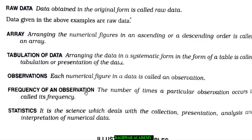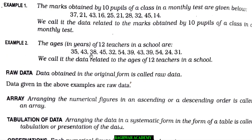Then you have frequency of an observation. Frequency means how many times it is coming in that data. The number of times a particular observation occurs is called its frequency. Just you see, in this data, if any figure you can find out — suppose 43 — you see it is coming 1 time and again 1 time, meaning 2 times. So frequency of 43 over here is 2. Similarly, 31 appears only 1 time, so frequency of 31 is 1.